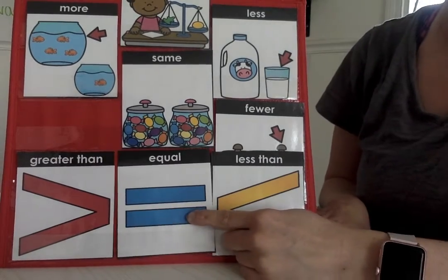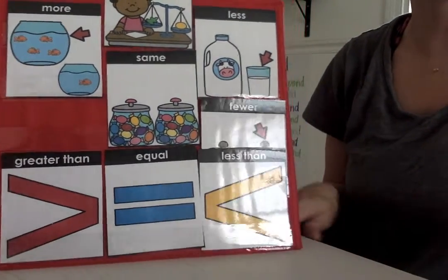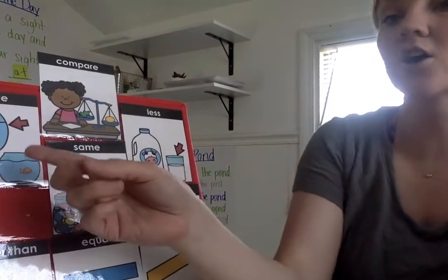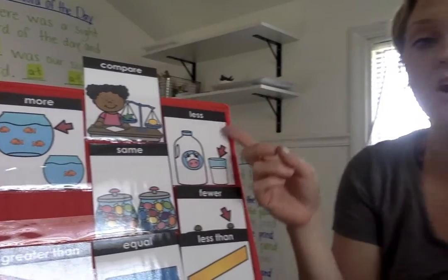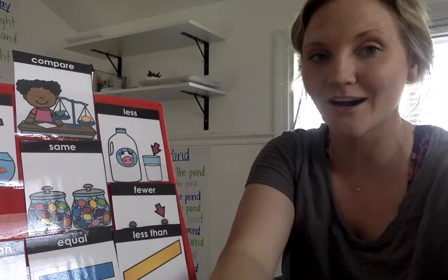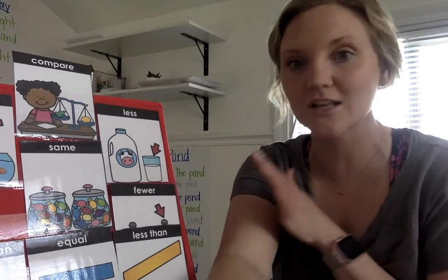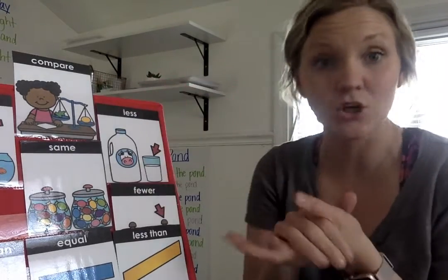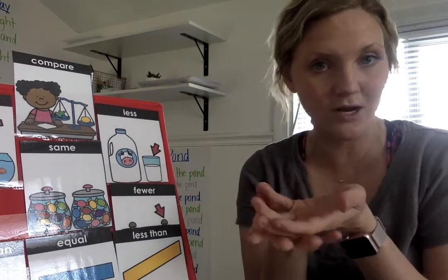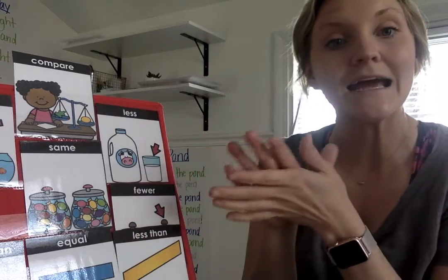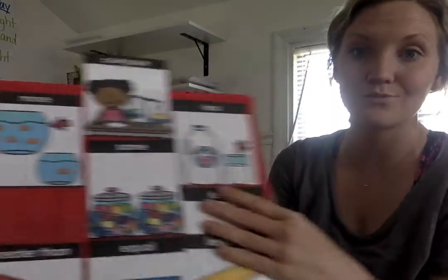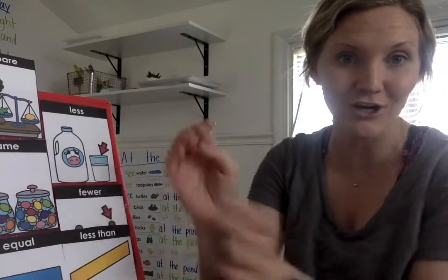So these are what we're really going to be focusing on this month: greater than, equal, and less than. As you go ahead and listen to 'Just Enough Carrots' on YouTube, you're going to hear the words more, less, same, and fewer — look for those words in that story. Then tomorrow we're going to start using these words to answer questions about carrots. We'll review our vocab and then get into comparing numbers by figuring out what has more and what has less. Great job!